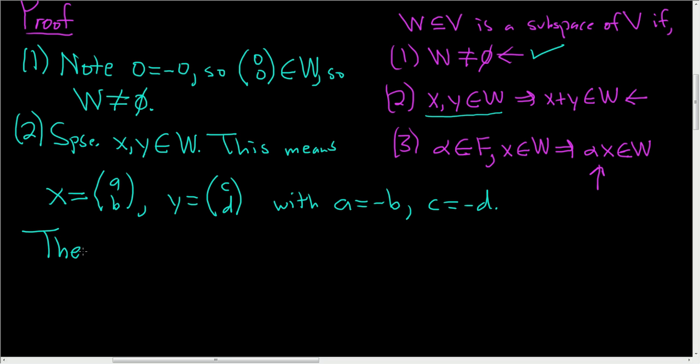And so now we just simply have to show that the sum X plus Y is also in W. So then X plus Y, well, X is simply AB and Y is CD. And how do you add vectors? Well, we just use regular component-wise addition. So this is A plus C and here we have B plus D. And now in the case of X, we had to show that X was equal to negative B. Here we have to show that A plus C is equal to negative the quantity B plus D.